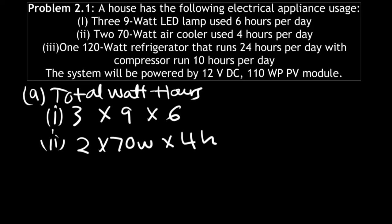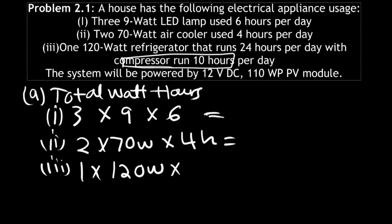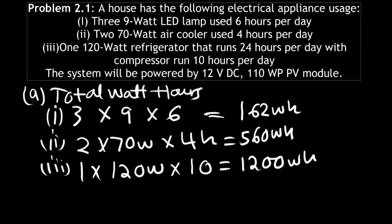For the third appliance we do the same. We have one 120-watt refrigerator that runs 24 hours per day, but the compressor runs only 10 hours. So we take the compressor hours only: one times 120 multiplied by 10, giving 1200 watt hours. The air cooler gives 560 watt hours and the LED lamps give 162 watt hours. Now we add these watt hours to get a total.